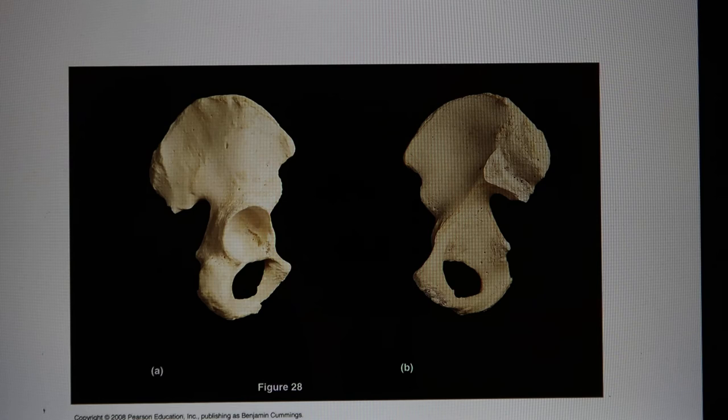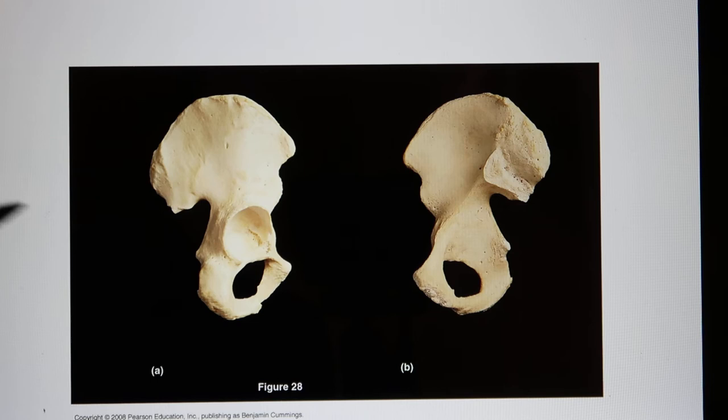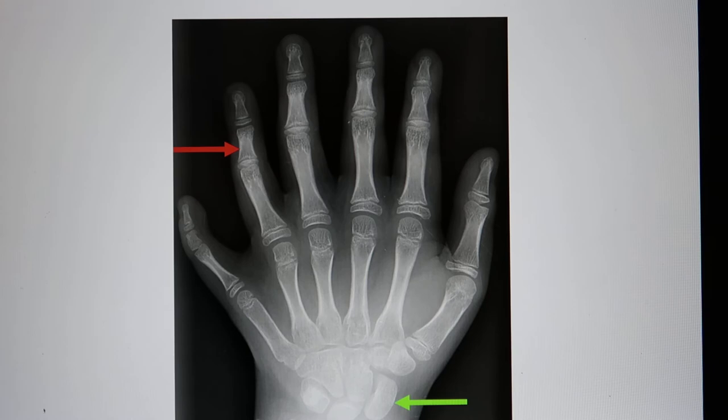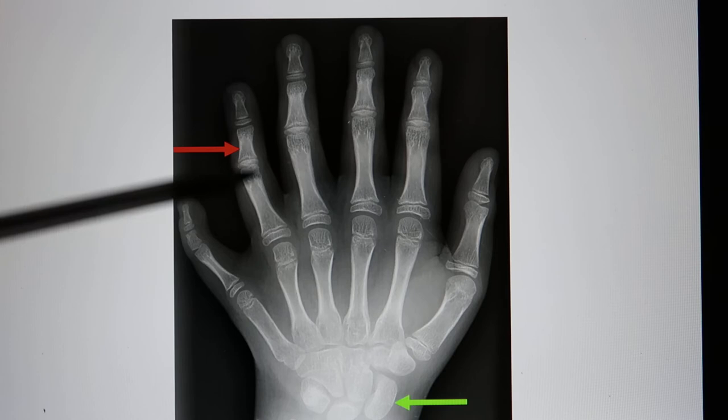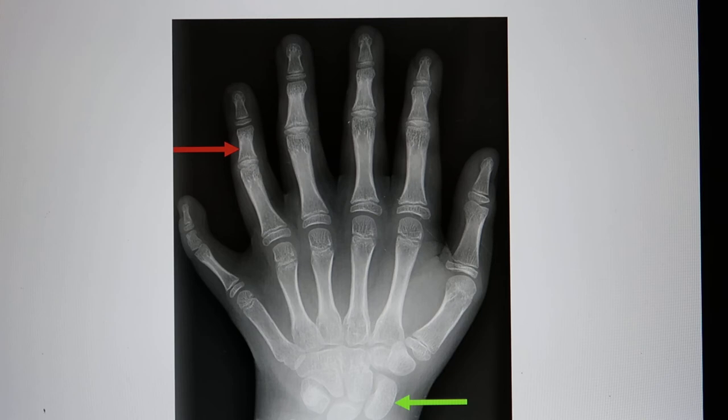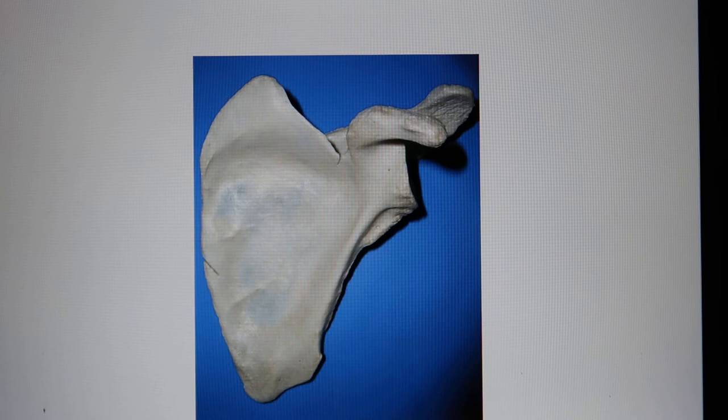Let's do some questions. The hip bone is an irregular bone. Here is a hand — this is a unique hand where the person has six fingers. The phalanges are long bones. The carpals are short bones. The scapula is your shoulder blade and it's a flat bone. So I can give you a bone and ask you what shape it is, based on the shape.